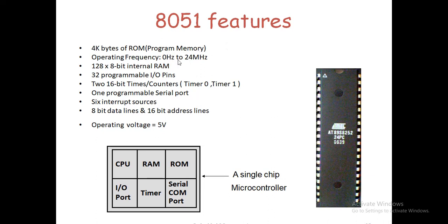The operating frequency is 0 to 24 MHz. It has 128 bytes of internal RAM and 32 programmable I/O pins — that is a major advantage of the 8051. In case of Arduino you have fewer input and output points. It also has two 16-bit timers and counters, one programmable serial port, and six interrupt sources.